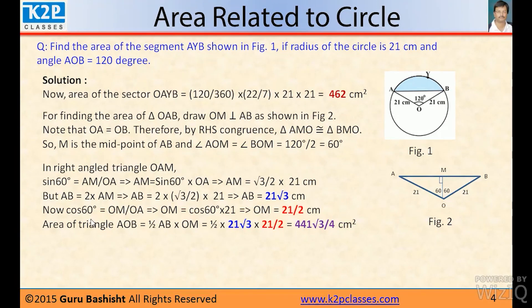Now, cos 60° = OM/OA. So OM = cos 60° × 21. And you know that cos 60° is 1/2. So OM is 21/2. So the area of triangle AOB is ½ base × height. So base is 21 × √3, height is 21/2. So area of this triangle is 441√3/4 cm².